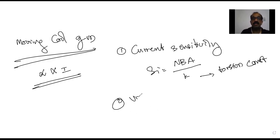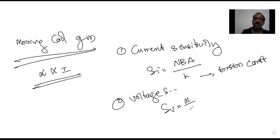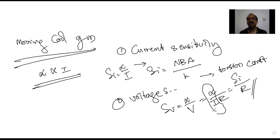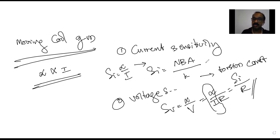Current sensitivity is defined as deflection per unit current (α/I). Voltage sensitivity is deflection per unit potential difference, and can be expressed as current sensitivity divided by resistance. An important point: current sensitivity does not depend on resistance, but voltage sensitivity does depend on resistance.